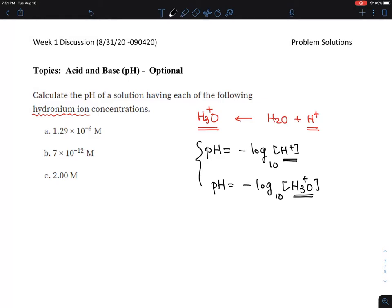So all you have to do is, for the first one A, pH equals minus log10 of 1.29 times 10^-6. You can just simply plug the numbers in, or I can do it this way.